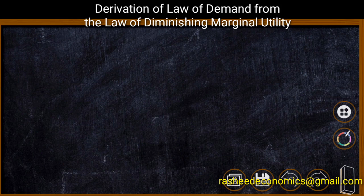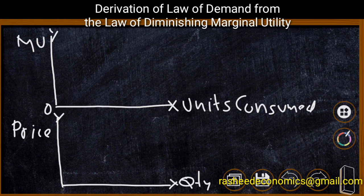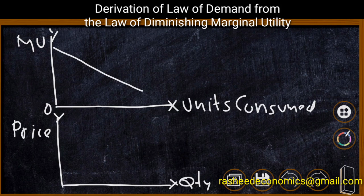Now, let us diagrammatically derive the demand curve from the law of diminishing marginal utility or marginal utility curve. In order to derive the law of demand from the law of diminishing marginal utility, we need two segments. In the upper segment, the x-axis shows units consumed and the y-axis shows marginal utility from the product. In the lower segment, we have price on the y-axis and quantity on the x-axis. We have a downward-sloping marginal utility curve in the upper segment, showing that when consumption increases, the consumer gets lesser and lesser utility — that is, marginal utility goes on diminishing.